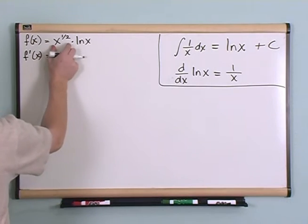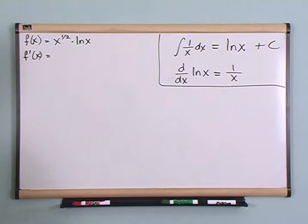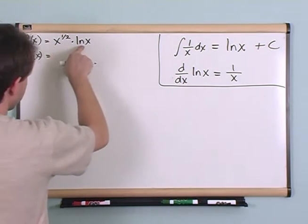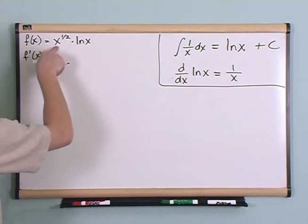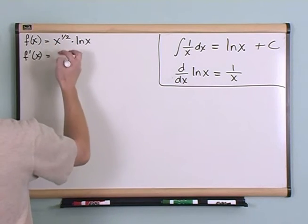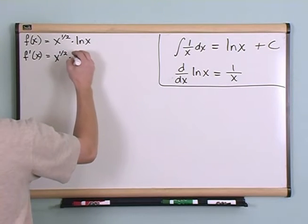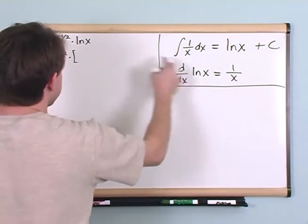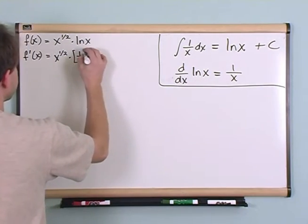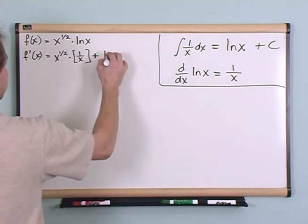Well, the first thing you should notice is that you have a function of x times a function of x, so you're going to have to use that multiplication rule. First term times the derivative of the second term plus the second term times the derivative of the first term. So let's do that. You have the first term, x to the one-half, times the derivative of the second term. The derivative of this is just simply one over x. First times the derivative of the second plus the second term.